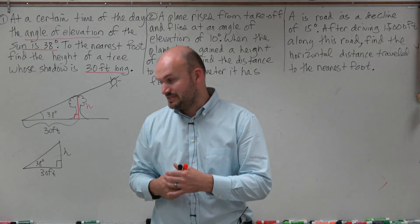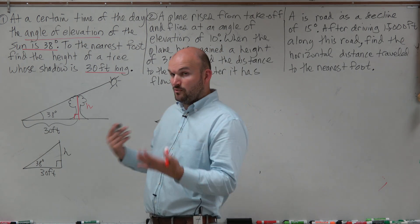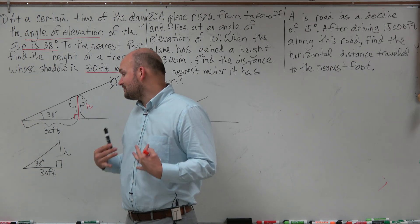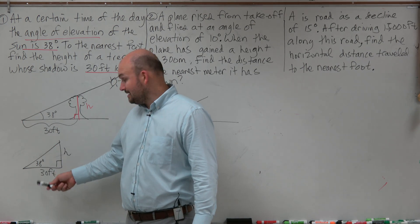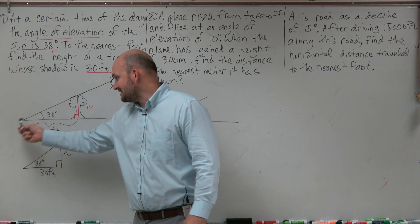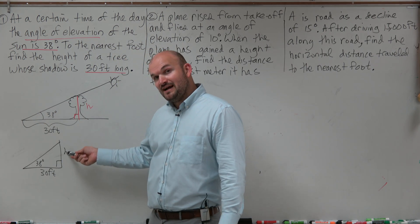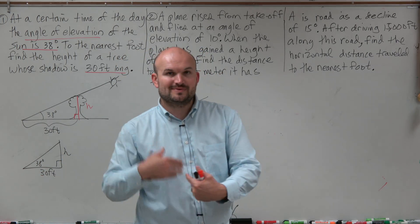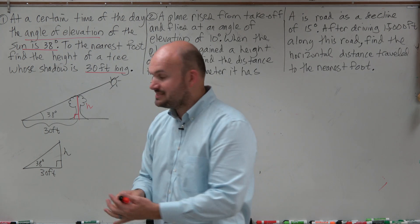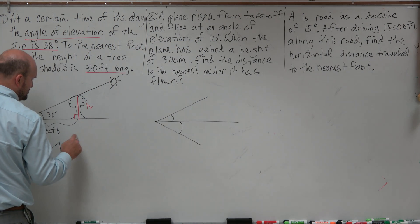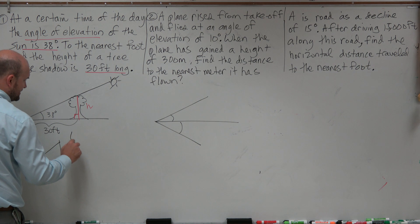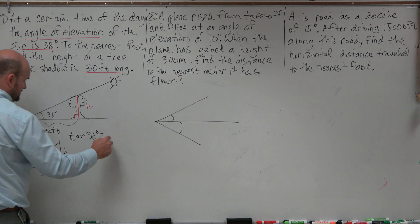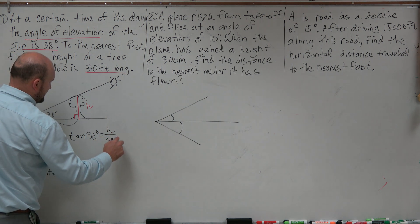Looking at our triangle with angle 38 degrees: we have the adjacent side and the opposite side, but we don't know the hypotenuse. We're trying to find h, which is the opposite side, and we're given the adjacent side, which is 30 feet. The trigonometric function that deals with the opposite and adjacent is tangent.